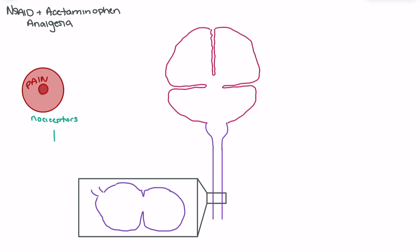These nociceptors send a nerve impulse into the dorsal horn of the spinal column. They will synapse on somatosensory nerves that will then send the impulse through the spinal column to the brain.